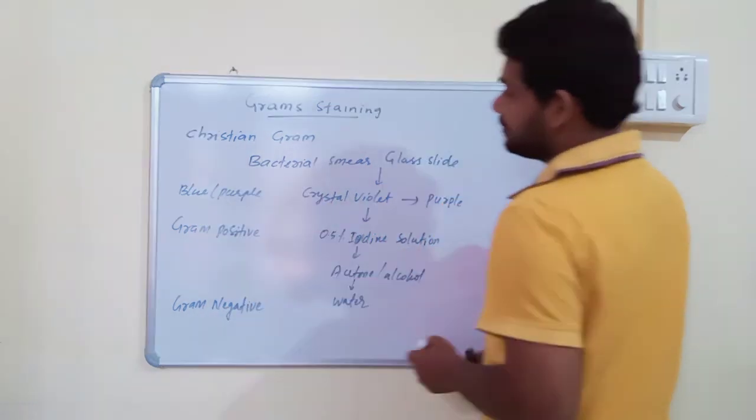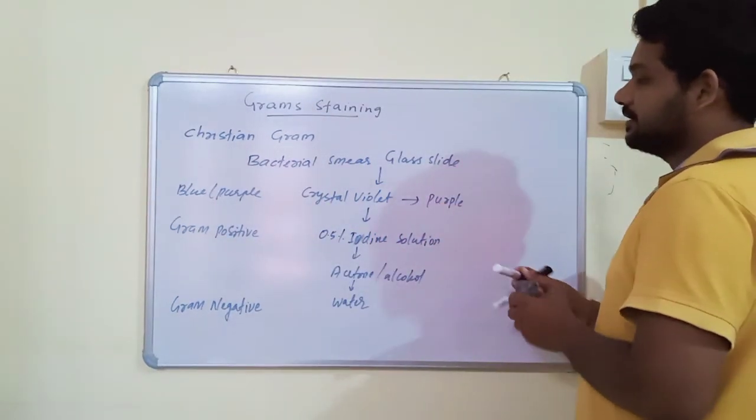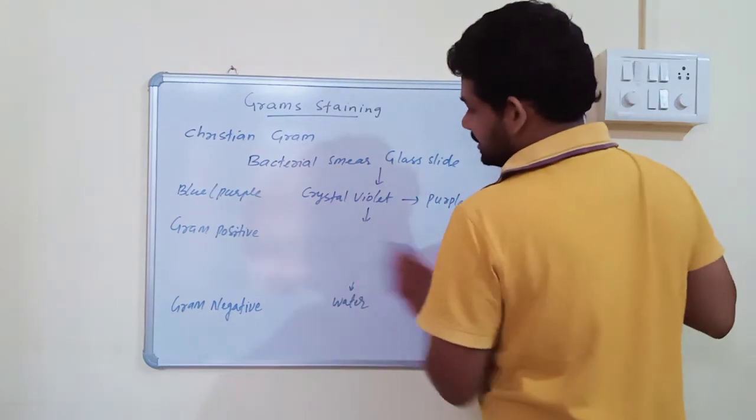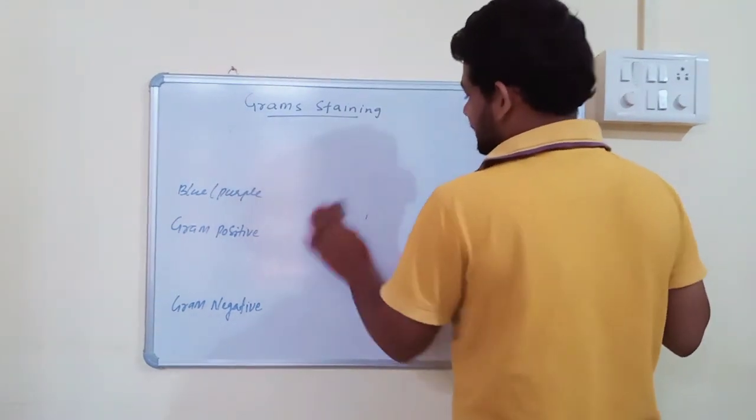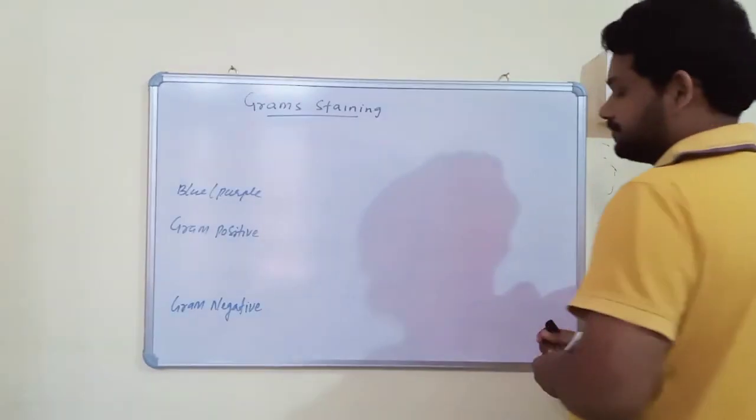If they lose color, they are called Gram negative bacteria. So this is the procedure of Gram staining.